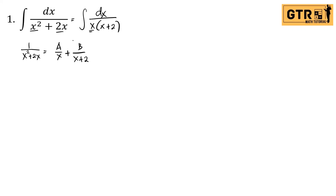Our next step is to solve for A and B. We have two methods: for number one we will use the substitution method, and for number two we will use the second method, which is equating coefficients.